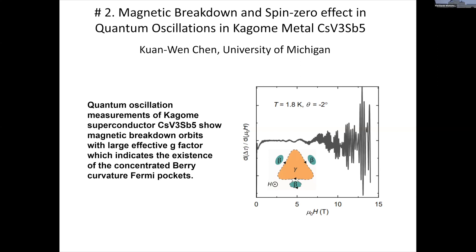We also measure the quantum oscillations up to 71 tesla. By rotating the crystal we find a spin-zero effect and extract the effective g-factor, which is also contributed to by the concentrated Berry curvature. This is interesting because we cannot directly measure the Berry curvature but instead use magnetic breakdown as a probe to measure this effect.